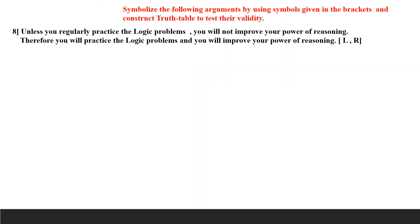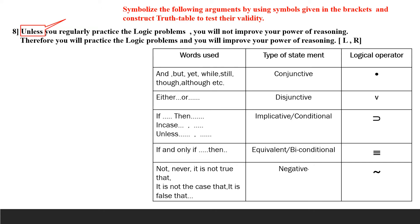Now we come to the 8th one. Unless you regularly practice the logic problems, you will not improve your power of reasoning. Therefore, you will practice the logic problems and you will improve your power of reasoning. L stands for 'you regularly practice logic problems,' R stands for 'you will improve your power of reasoning.' Unless means 'if not,' so both the antecedent and consequent have negation: curl L implies curl R.